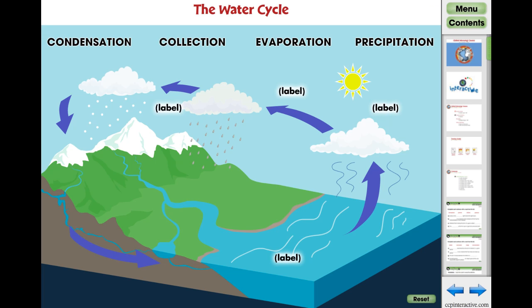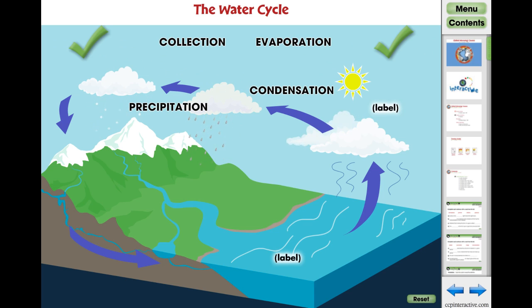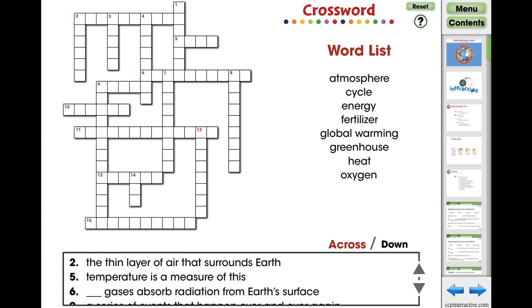Here's an example of one of our comprehensive interactive activities. Detailed instructions are provided. Simply drag a process from the list to its correct position on the water cycle to see it in action.